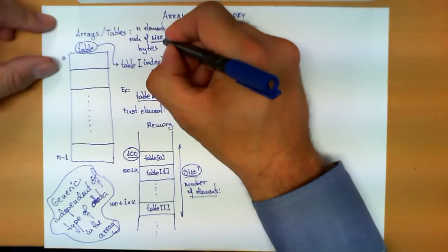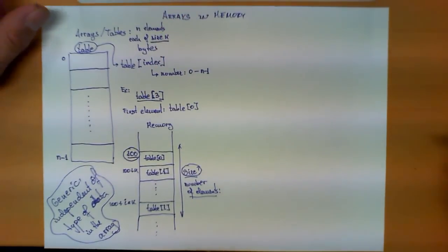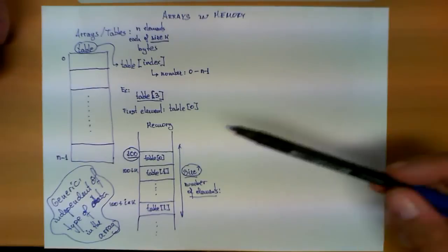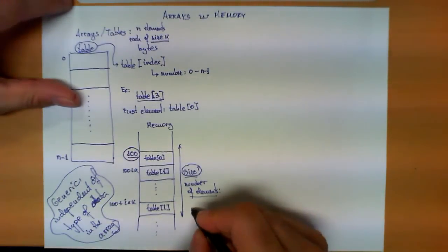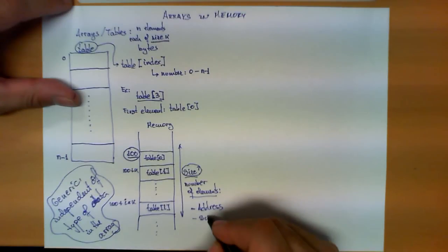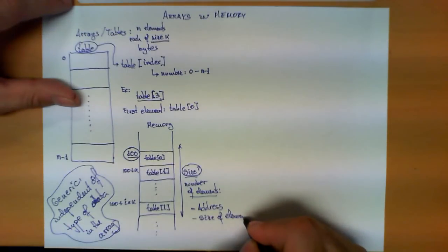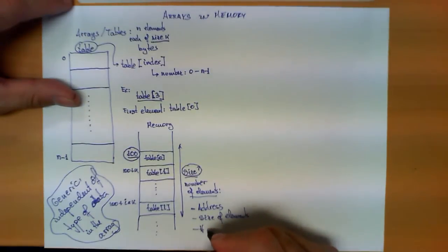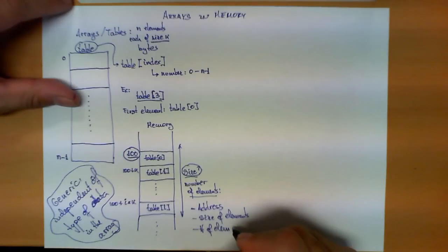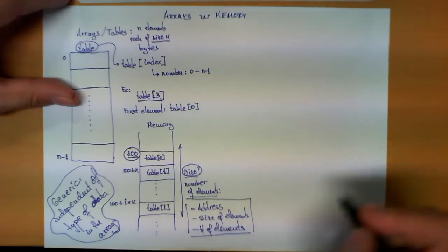Typically what happens when you manipulate arrays in memory, you need to know two parameters. The first one is the address in which it is stored, the second one is the size, or number of elements. And, of course, you also have to know the size k of each of the elements. Once you have these three parameters, not two, but three parameters: address, size of elements, and number of elements, then you can compute the address of any element in the array.